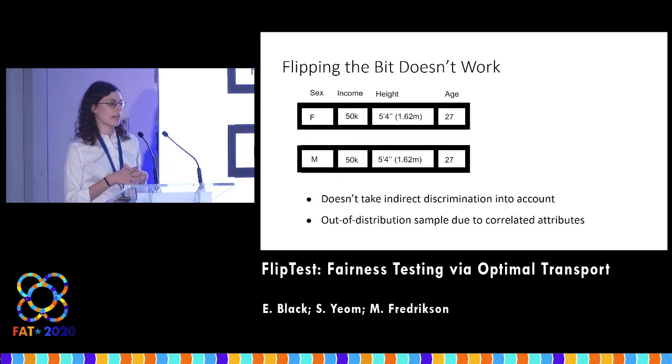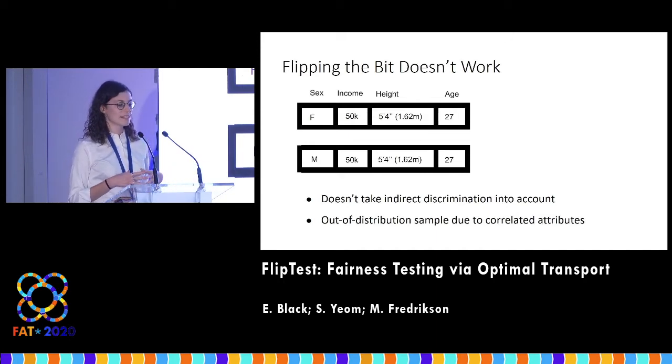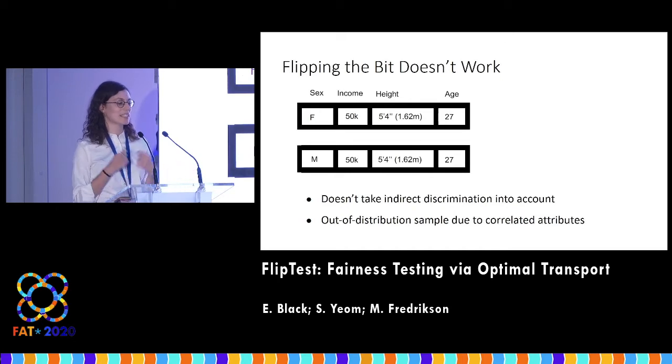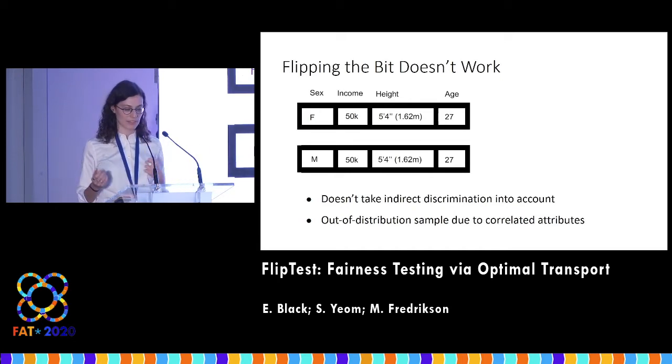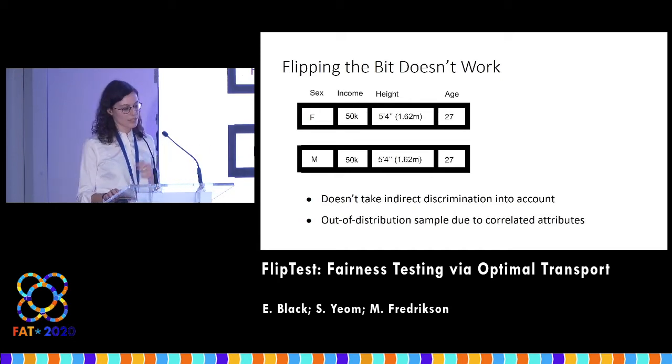But perhaps even more importantly, this doesn't capture discrimination based on proxies or related factors. For example, if the model is discriminating not based on sex exactly, but on some combination of income and height that can be a proxy for sex. So this approach doesn't quite work.